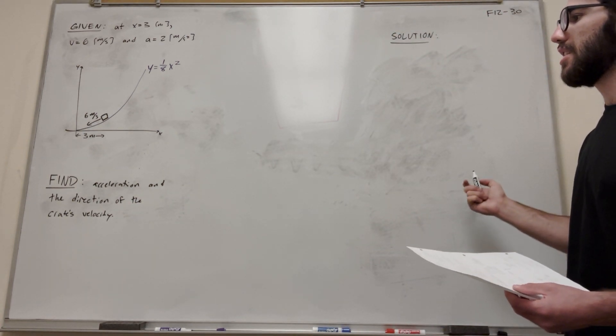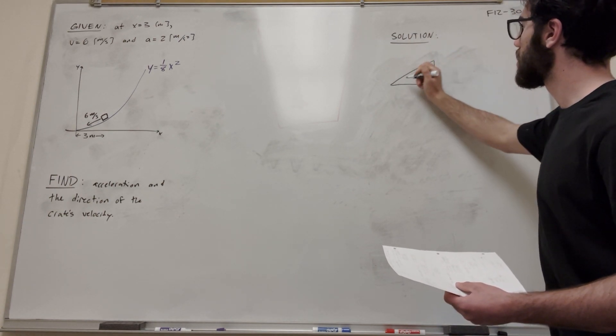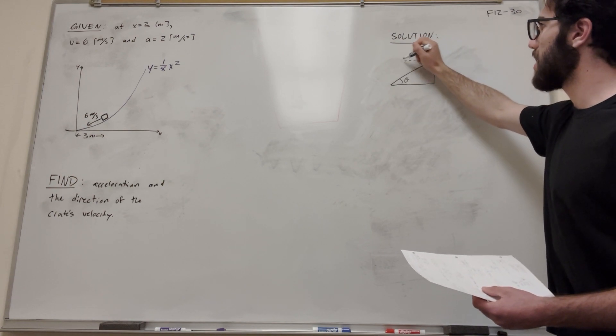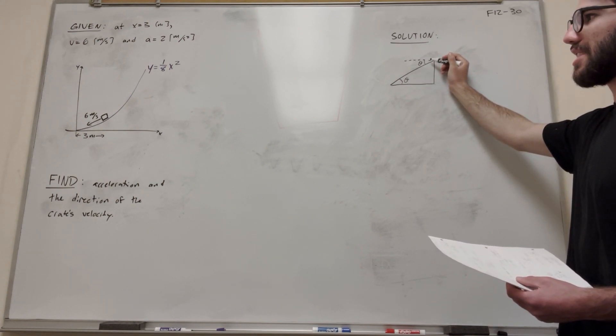So let's go ahead and draw out a little triangle. So we got this is our theta, and this is the theta we're solving for. And by the similarity of triangles, this theta is the same. So if we're solving for this theta, we're also solving for this theta.